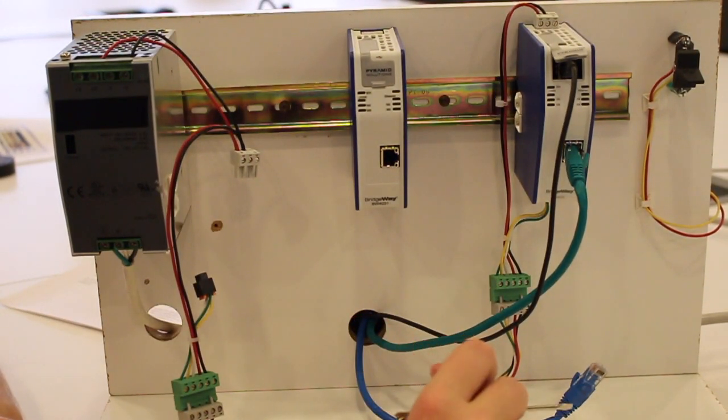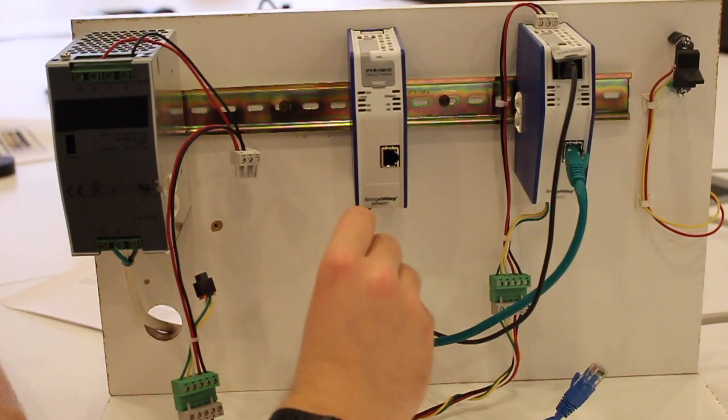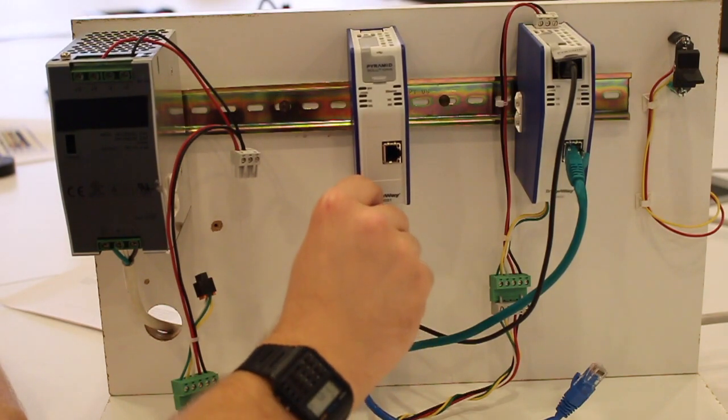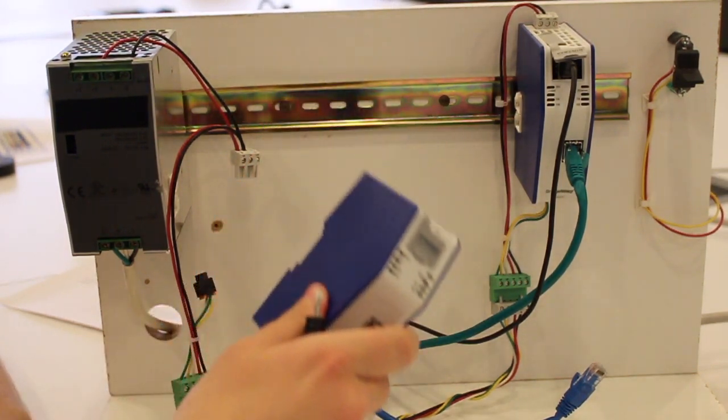If you ever need to unmount the device, simply use a small standard screwdriver to pull the DIN rail locking tab down, and then lift the device off the rail.